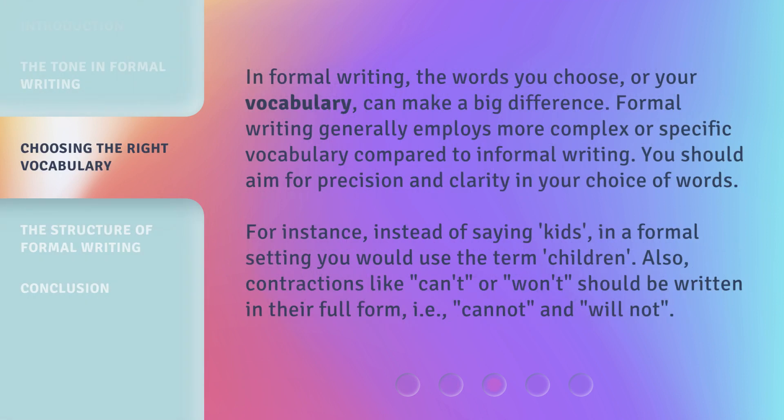In formal writing, the words you choose — your vocabulary — can make a big difference. Formal writing generally employs more complex or specific vocabulary compared to informal writing. You should aim for precision and clarity in your choice of words. For instance, instead of saying 'kids' in a formal setting, you would use the term 'children.' Also, contractions like 'can't' or 'won't' should be written in their full form — i.e., 'cannot' and 'will not.'